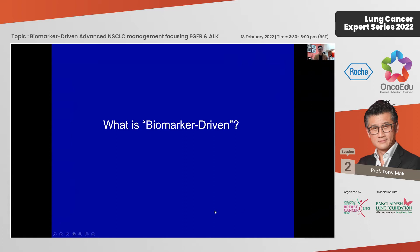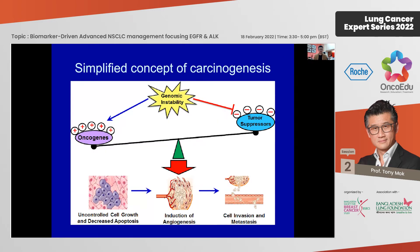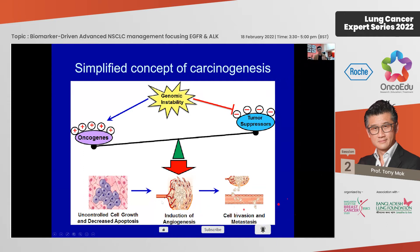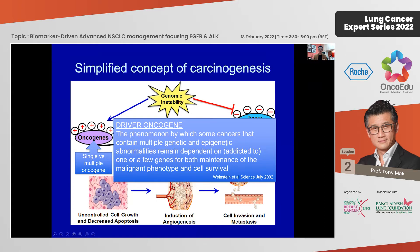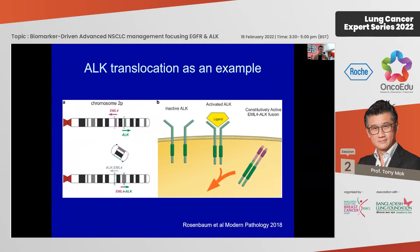I was asked to talk about biomarker-driven lung cancer. Let's look at the concept — what exactly does it mean? This is a very simplified concept of carcinogenesis: there are oncogenes that promote cancer growth and tumor suppressor genes that prevent it. The loss of tumor suppressor genes and gain of oncogenes leads to induction of apoptosis, angiogenesis, and eventually the cancer characteristic of metastasis.